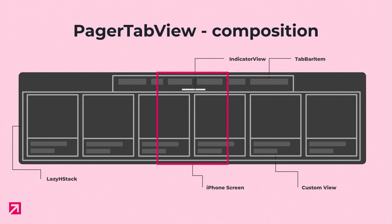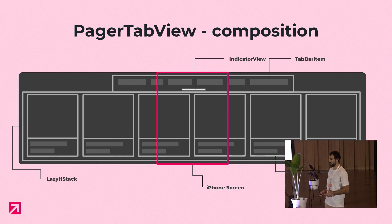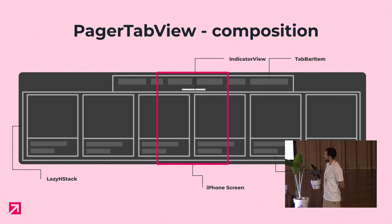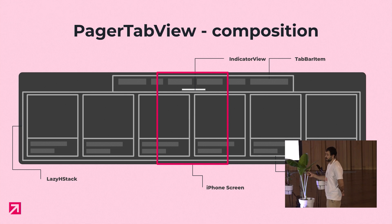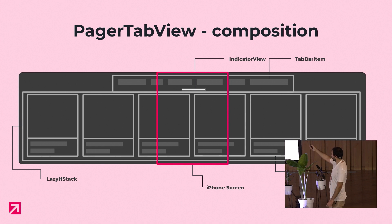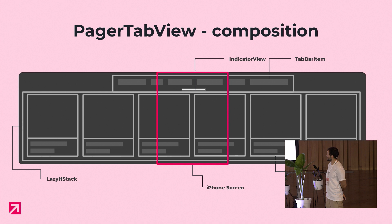The view hierarchy of the library: the developer provides the pages — these six pages that appear on the screen. These pages are added inside a lazy horizontal stack, which provides great performance, especially when we have a large amount of pages. Then we have the tab bar item, which is a view associated with the page that, whenever the user taps it, the selected page changes. These tab bar items are added inside a scroll view. And lastly, we have the indicator view, which indicates the selected page and updates on content offset changes.